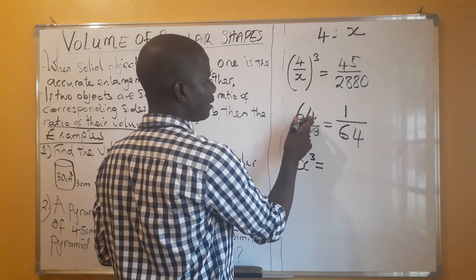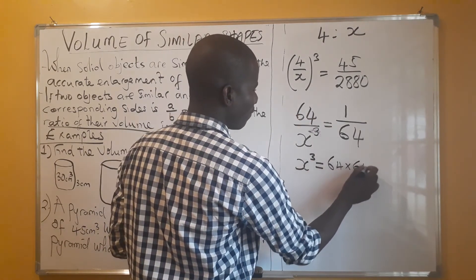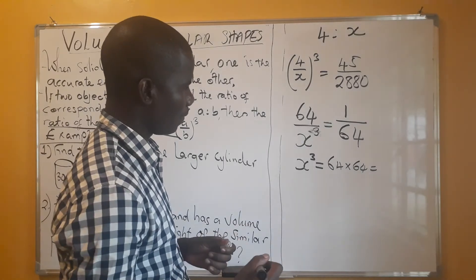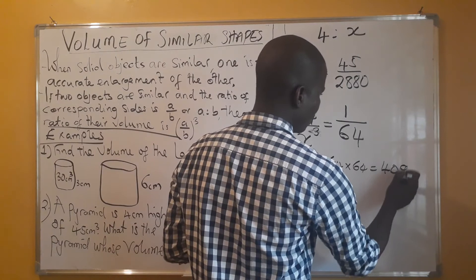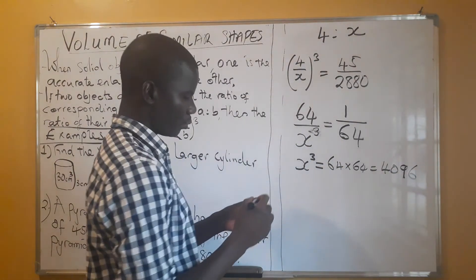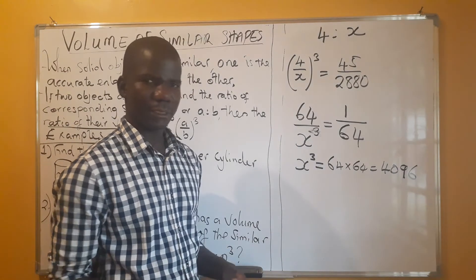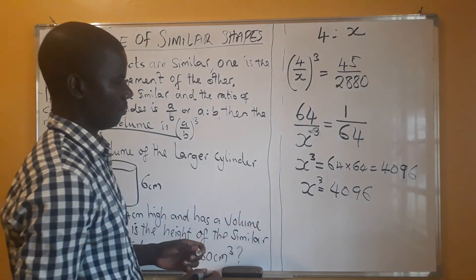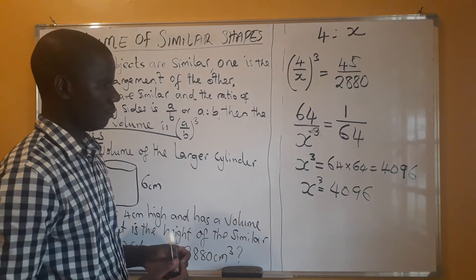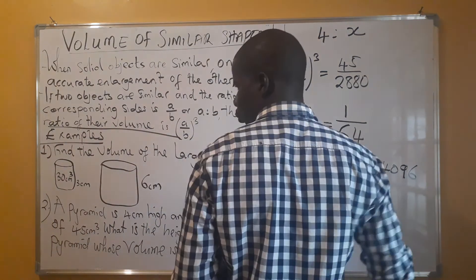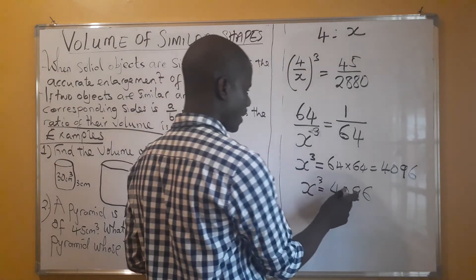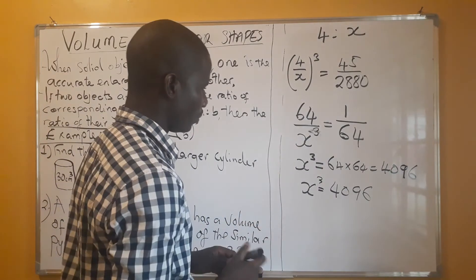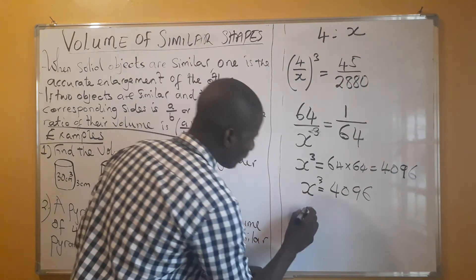After cross multiplying, we get x³ = 4096. At this point we need to find the cube root of 4096 to solve for x, which represents the height of the larger pyramid.